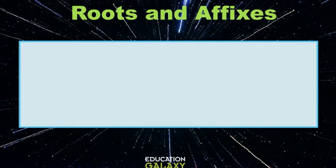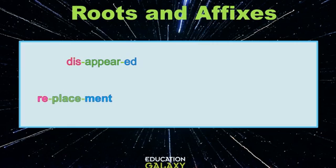Let's look at some more roots and affixes. Disappeared — dis means not, -ed at the end makes the verb past tense, and appear is the root word. Then we have another word, replacement. Re means again, and -ment means result of an action, so replacement means the action or process of replacing someone or something.